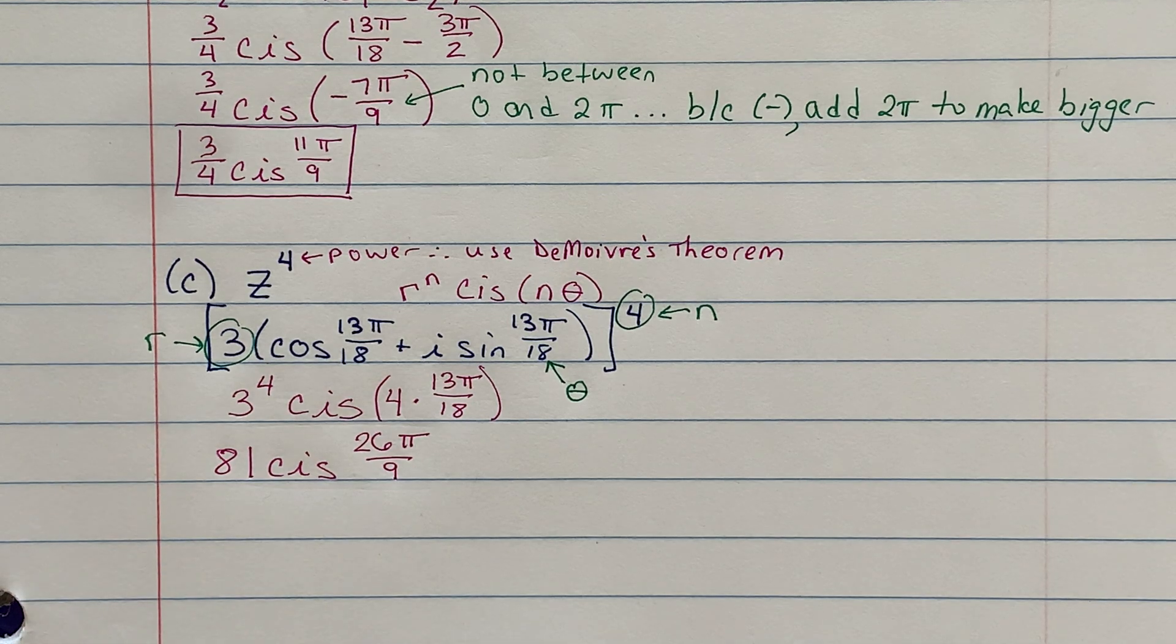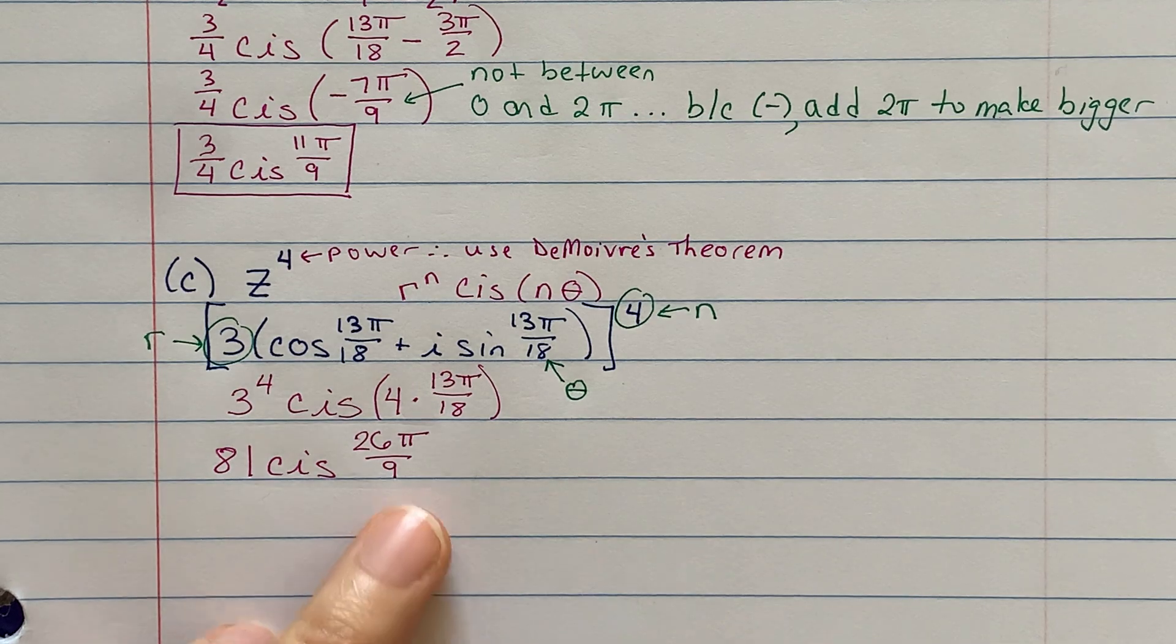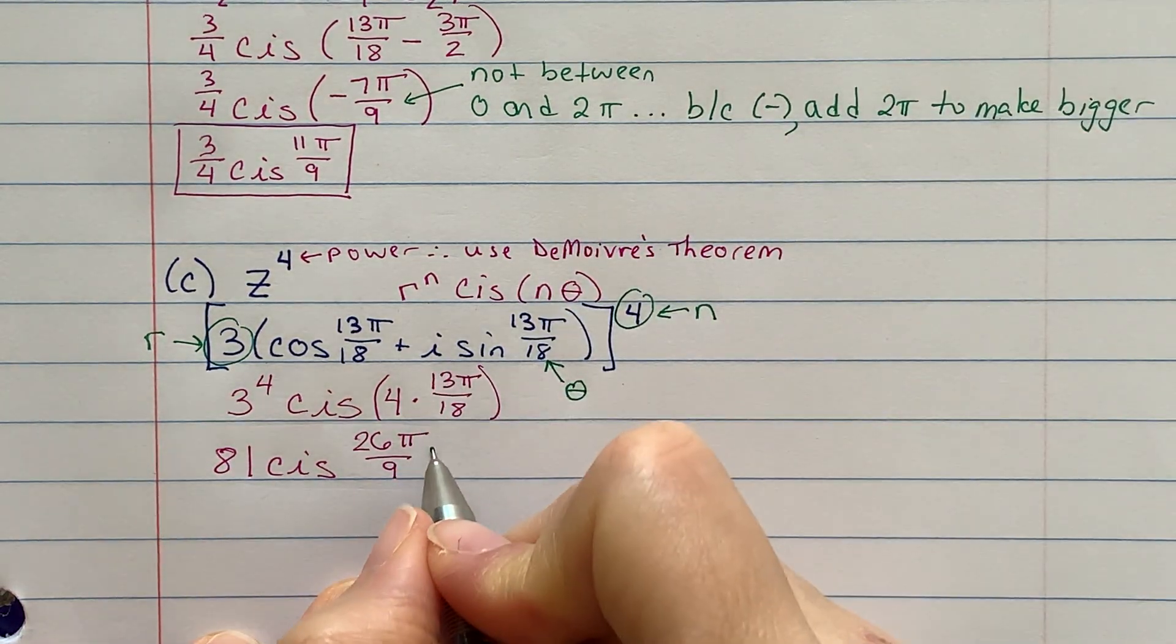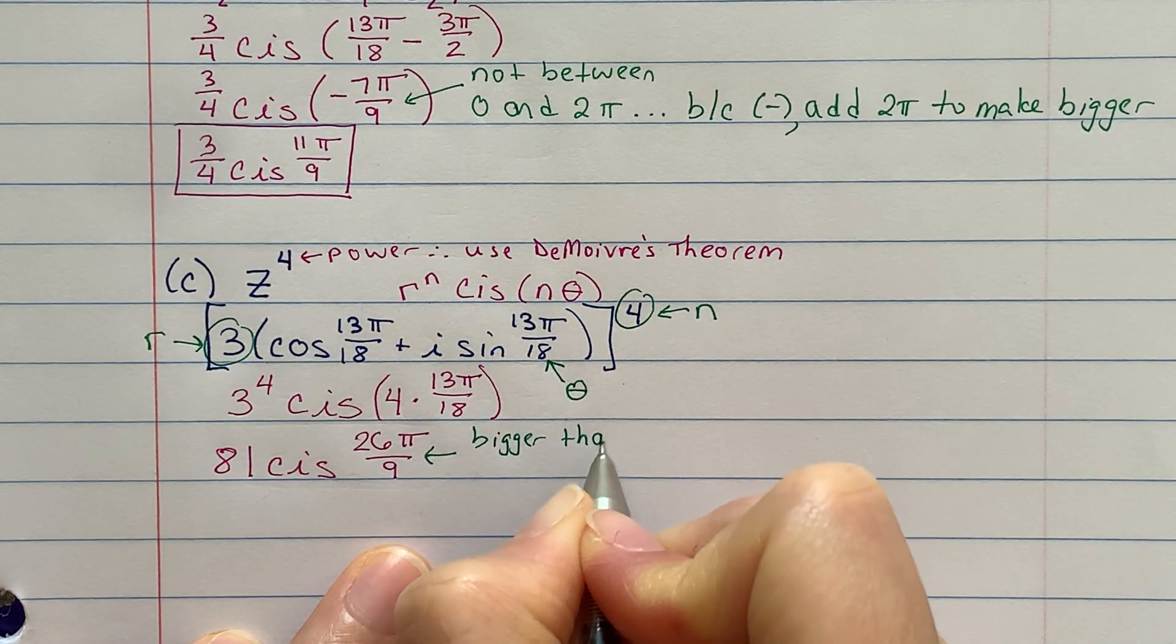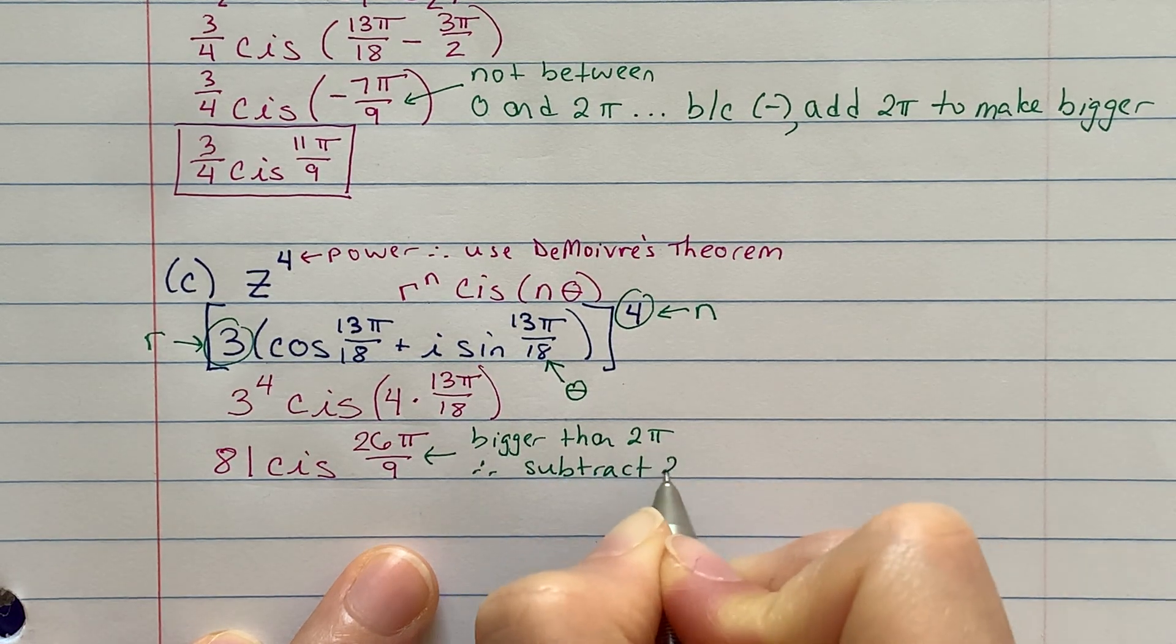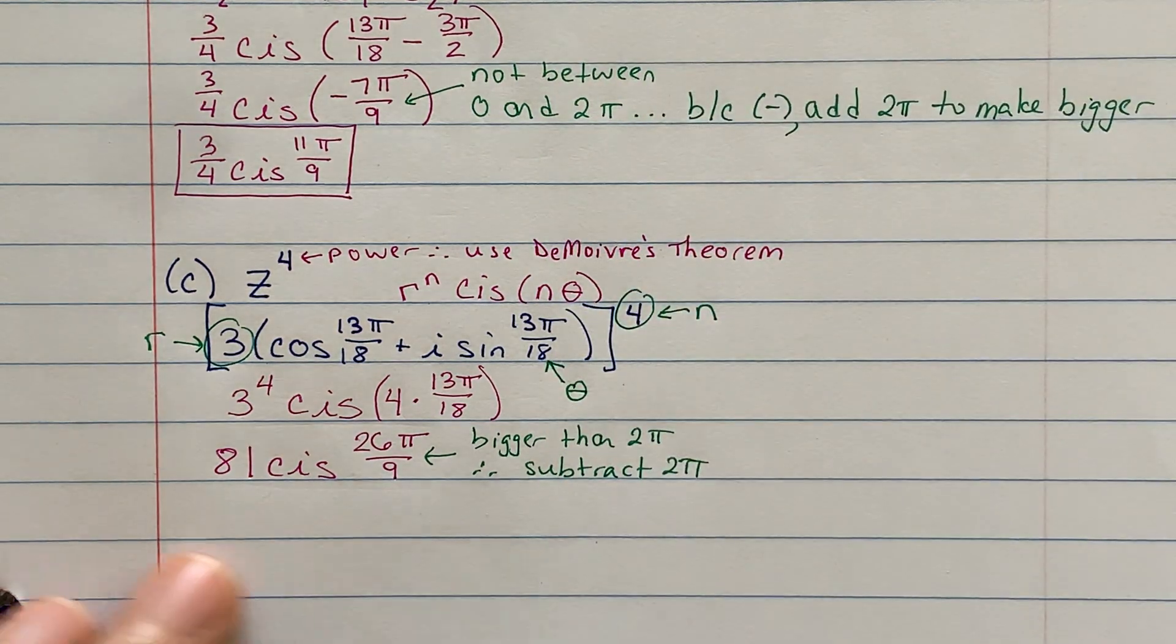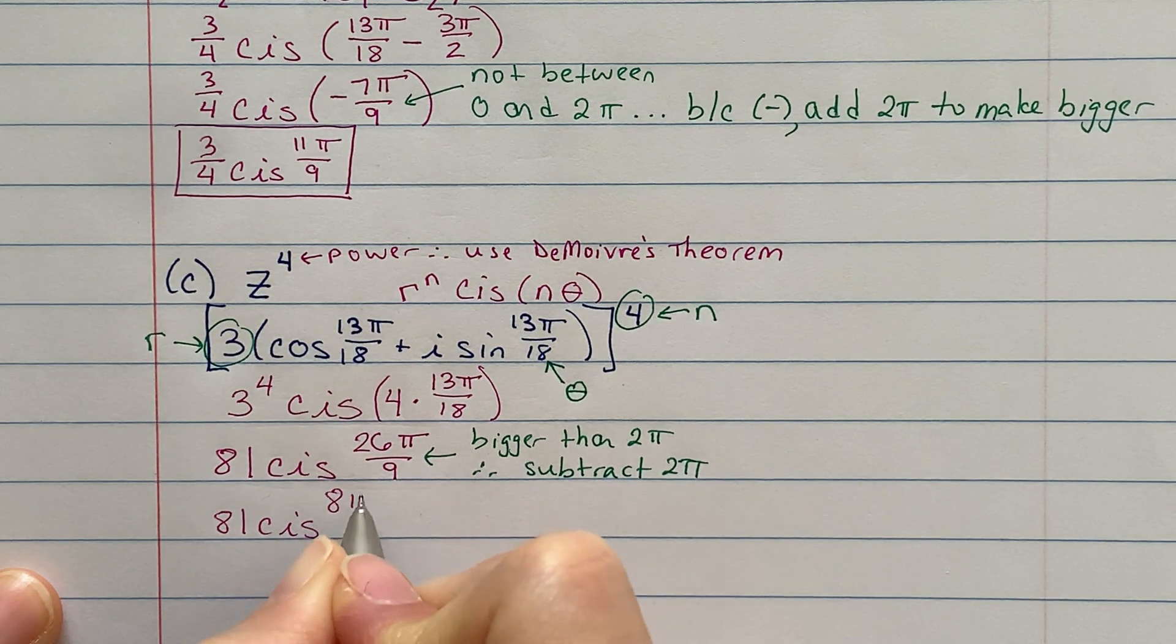And then again, you just look at your answer and decide, is this between 0 and 2π? I think 18 over 9 is 2. So this is bigger than 2. So what do I do if it's bigger again? This is bigger than 2π. Therefore, just subtract 2π. So on my calculator, I'm going to subtract 2 from this, and I get 8 ninths. So this is really 81 cis 8π over 9.